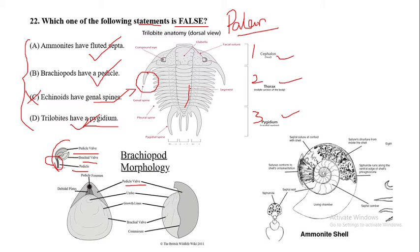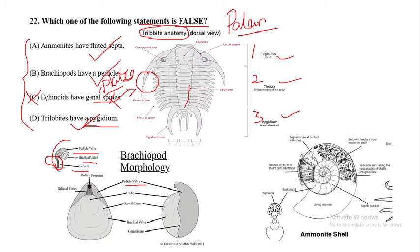Echinoids do not have genal spines — echinoids have genal plates. Genal spines are present in trilobite anatomy, whereas echinoids have genal plates. Therefore, Option C is the false statement, and the answer to Question 22 is Option C.